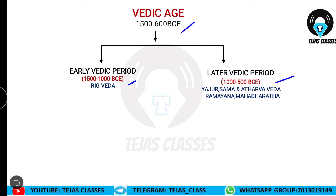The early Vedic period is also known as the Rig Vedic period because the information regarding this early Vedic period is present in the Rig Veda, and no other Vedas were present at this period. Only in the later Vedic period do we come across various other Vedas, such as Yajurveda, Samaveda, Atharvaveda, and the epics Ramayana and Mahabharata.